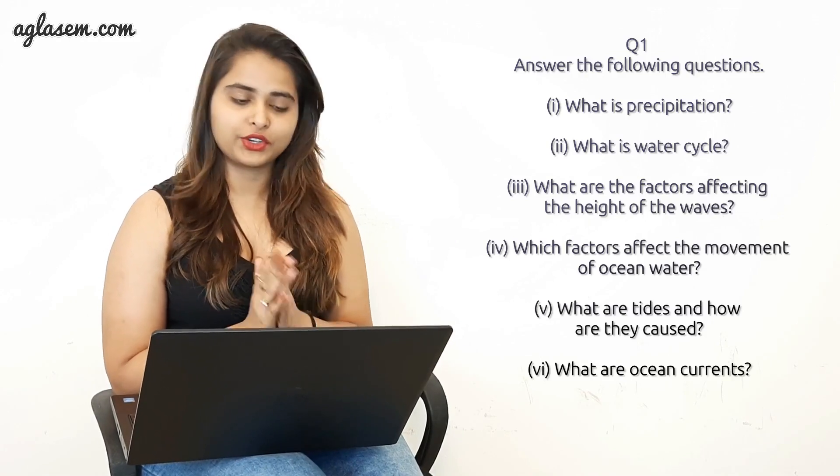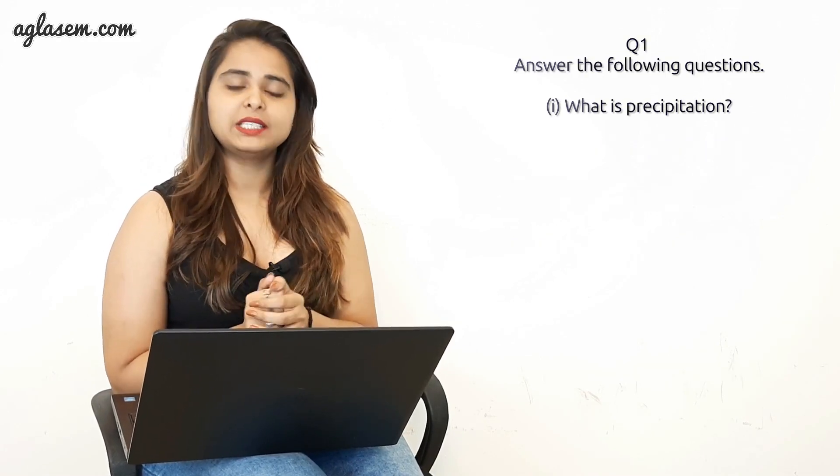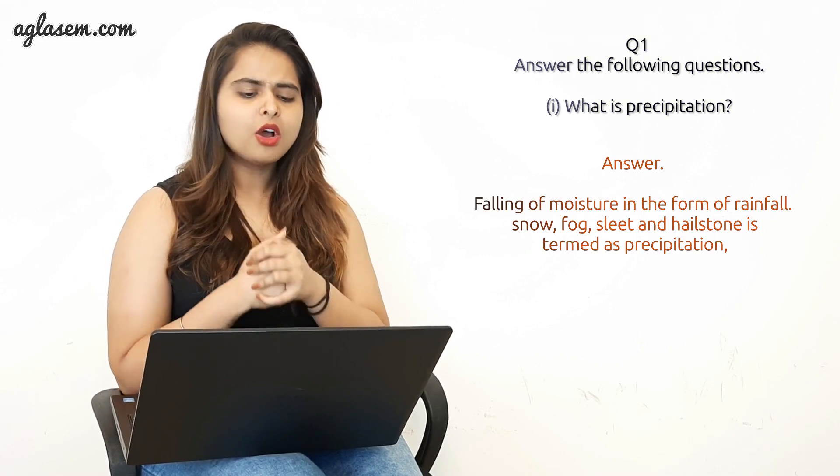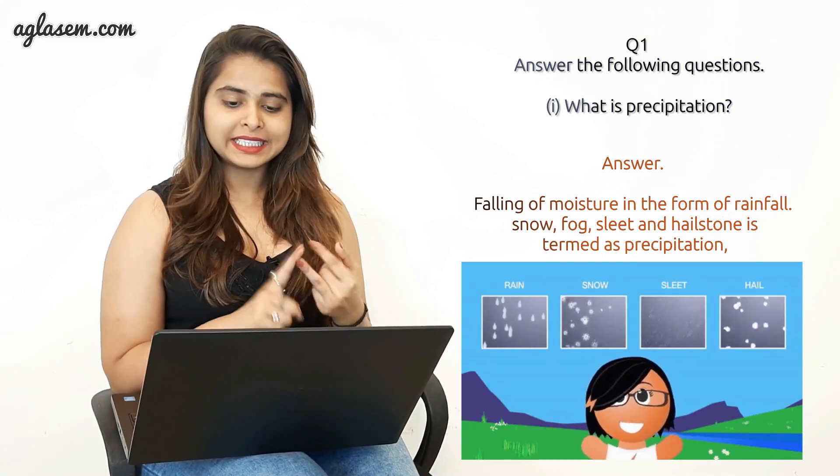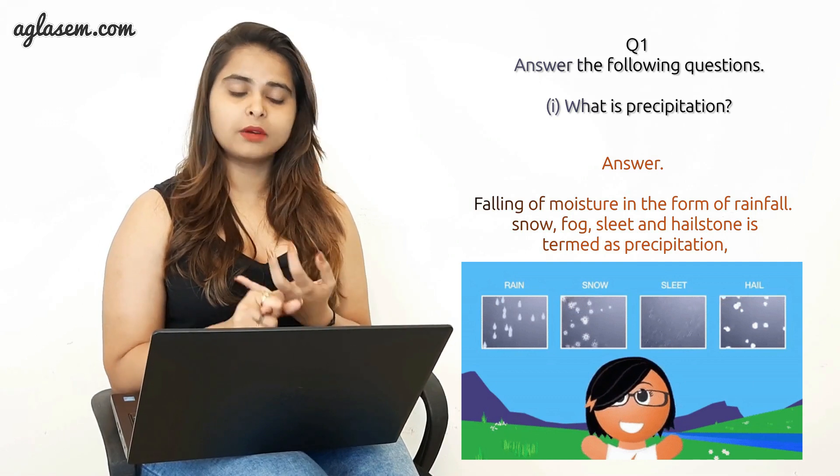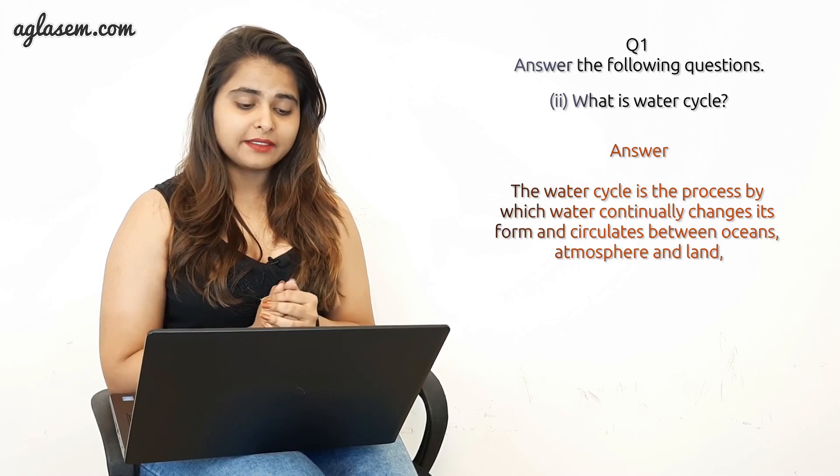Now let's start with the exercise of the chapter. The first question is answer the following. First part is what is precipitation? Answer: Falling of moisture in the form of rainfall, snow, fog, sleet, and hailstones is termed as precipitation. Second option is what is water cycle?